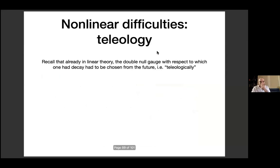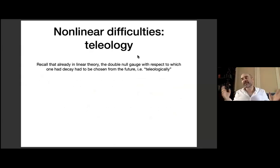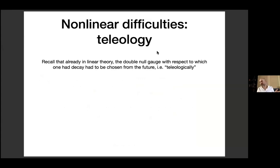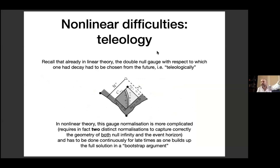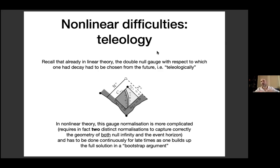Finally, the issue of teleology. Already in linear theory, one aspect of double null gauge and geometric gauges based on transport equations is that you will have to normalize the gauge teleologically from the future. We already saw this in linear theory: in order to have decay to linearized Kerr, you had to add a pure gauge solution, which effectively selected the sphere and normalization of the two null cones in the future. In nonlinear theory you also have to do this — there are two distinct double null foliations used, normalized one to null infinity and the other to the event horizon, and this must be done continuously in the context of the bootstrap argument.